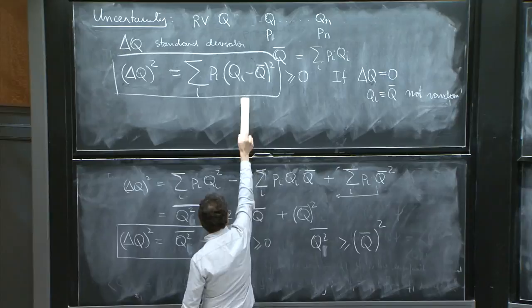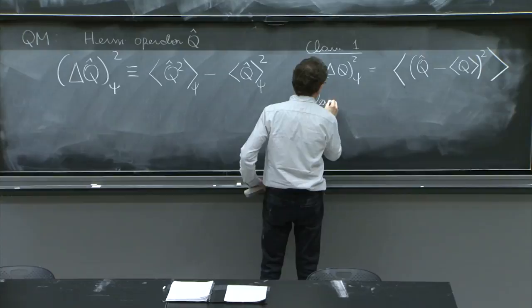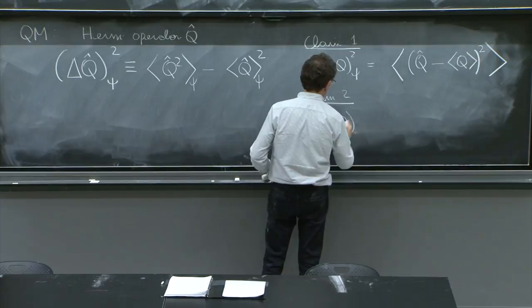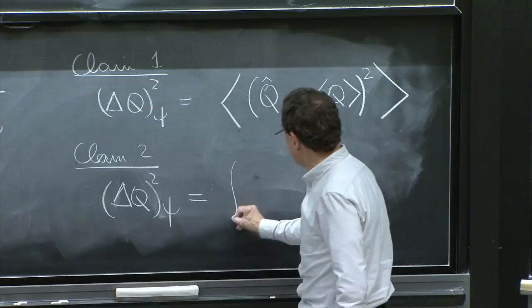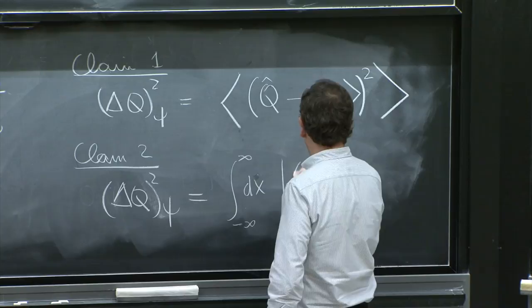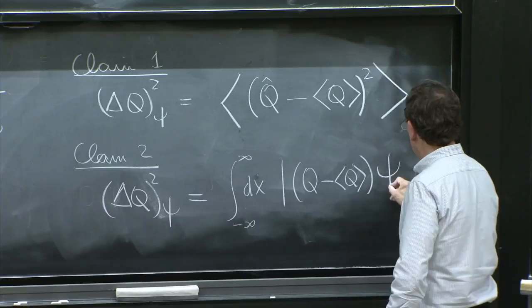Claim 2 is that another rewriting, delta q squared on psi, can be rewritten as this. I will write it as an integral, integral from minus infinity to infinity of q minus q expectation value acting on psi. Look at that.